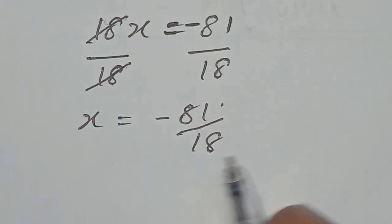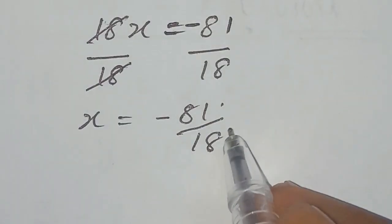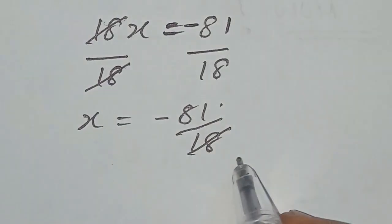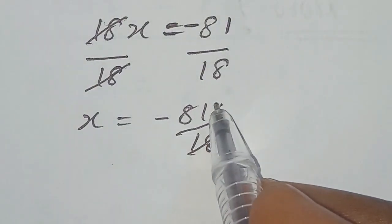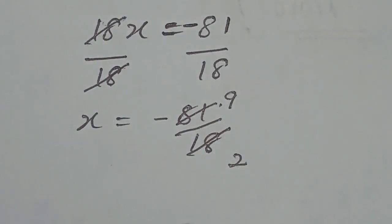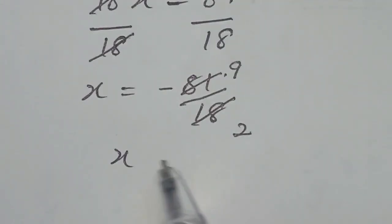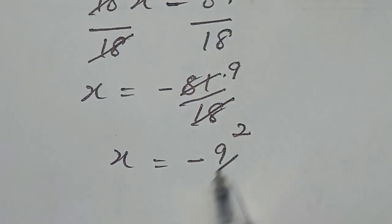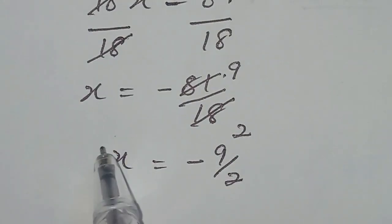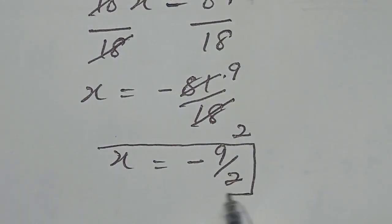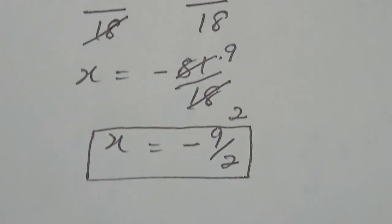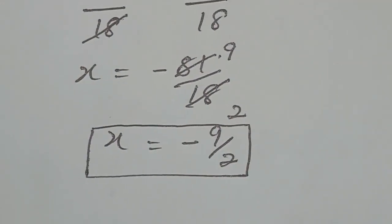We can simplify this. If we divide this by 9, 18 divided by 9, we have 2. 81 divided by 9, we have 9. Then our x becomes minus 9 over 2. This becomes our value of x.